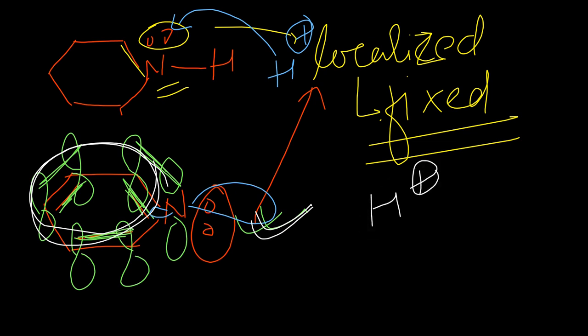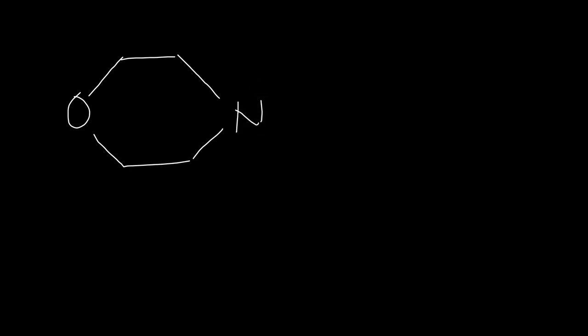H+ can easily attack. Now the third option - we have a nitrogen atom. This is like a piperidine structure, but in this case, we have an oxygen atom attached to this ring. Carbon is in the area.